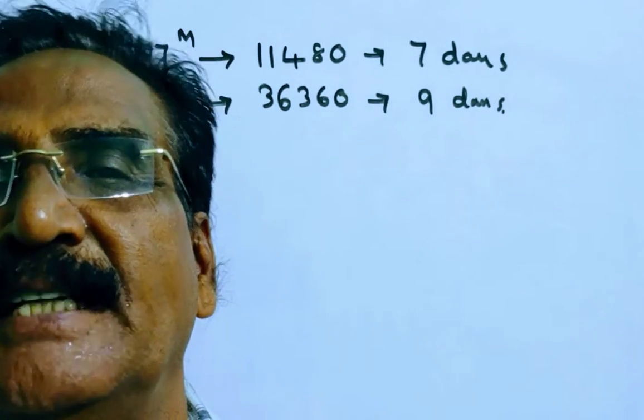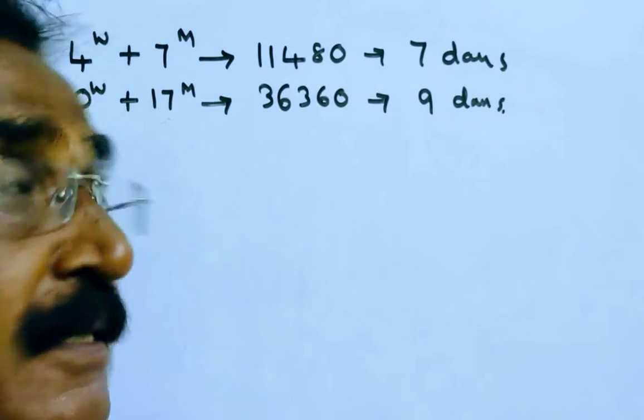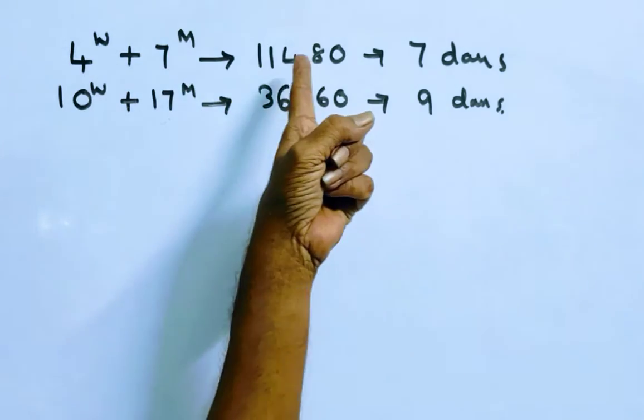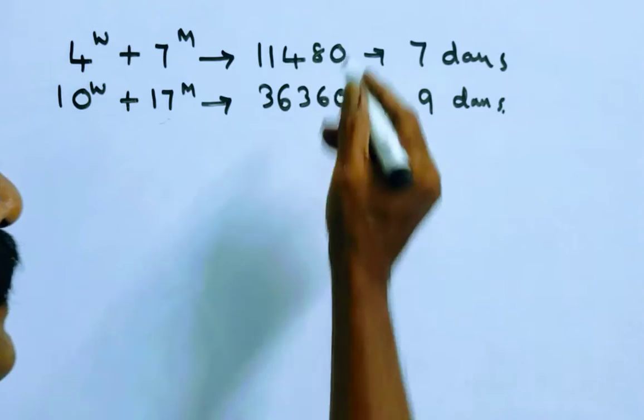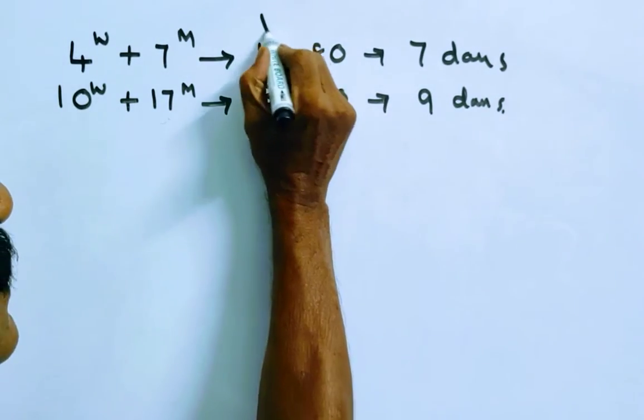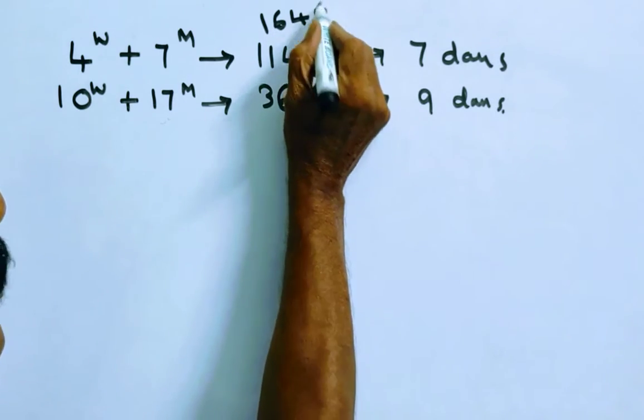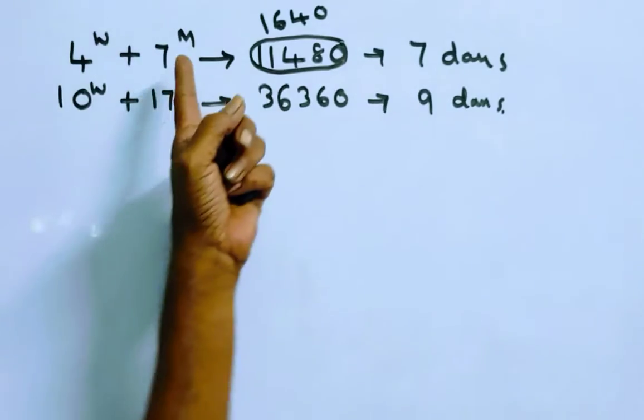Hi friends, good morning. Please look at the next problem in time and work. The problem is given in the description box. Four women and seven men earn 11,480 in seven days. So in one day, four women and seven men can earn 1,640 in one day.